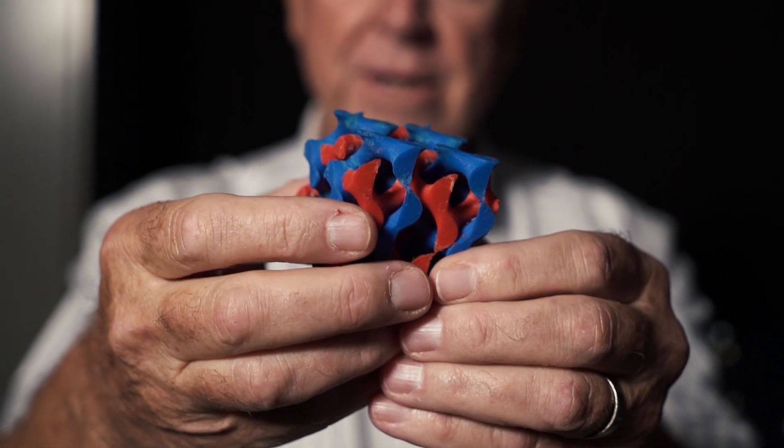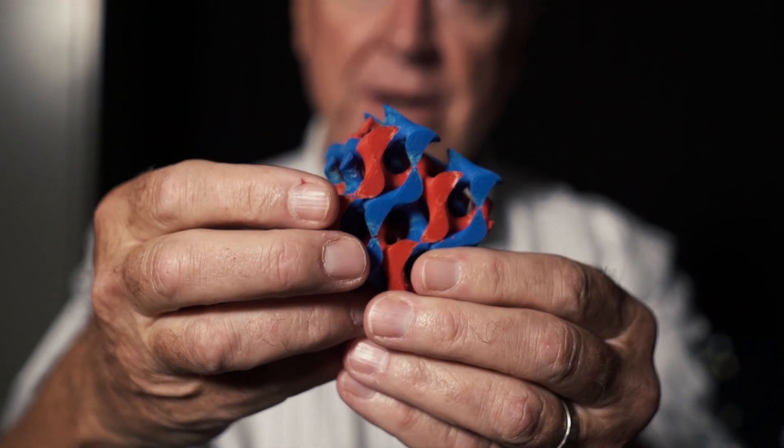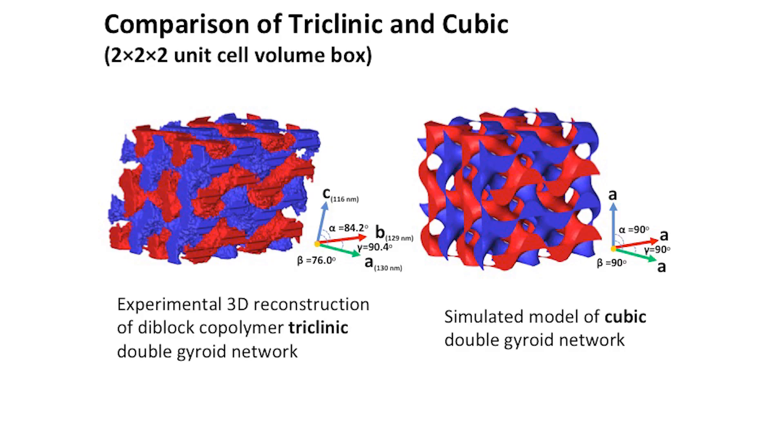We have these sort of ideal structures that the mathematical community can prove exist and so on. Then you have the question of when molecules come together and form these things, they're not mathematicians, they're molecules, they're following some processing steps and they're trying to organize themselves to minimize their free energy and they may or may not fit perfectly into these idealized structures.